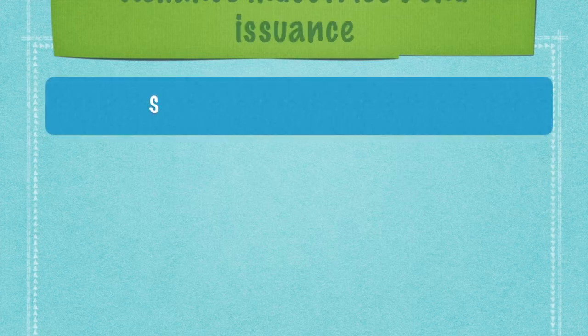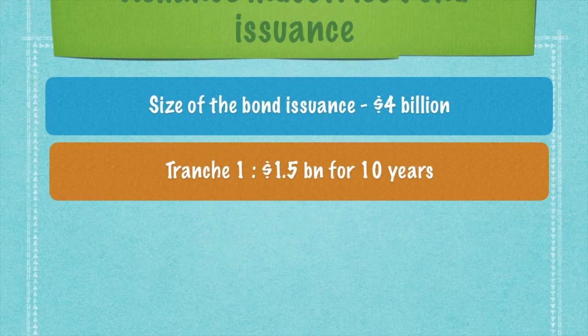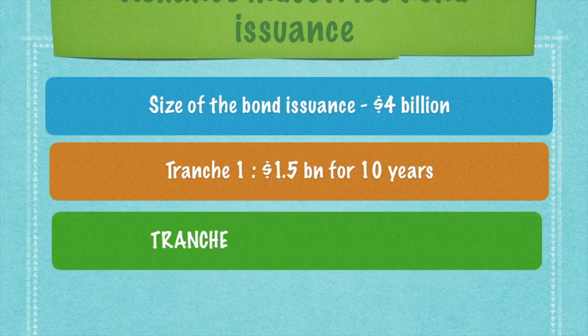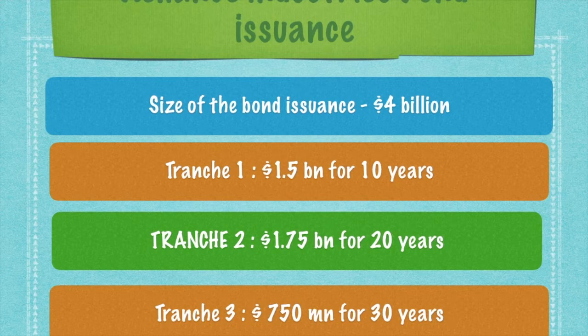Reliance Industries had the following features of the bond issuance. The entire 4 billion dollars, while collected at one time, will be repaid in tranches. These tranches are as follows: the first tranche is 1.5 billion dollars, to be repaid after 10 years; the second tranche is 1.75 billion dollars, to be repaid after 20 years; and the last tranche of 750 million dollars will be repaid after 30 years.